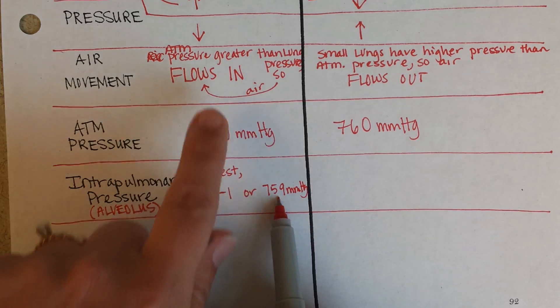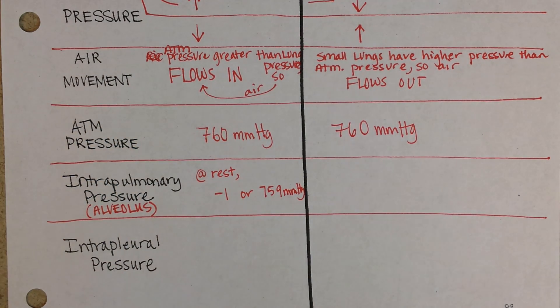So if atmospheric pressure is greater than the pressure in the alveoli, then air will flow in. Air is just going to flow from its area of high concentration outside of the body to its area of lower concentration inside of the body.